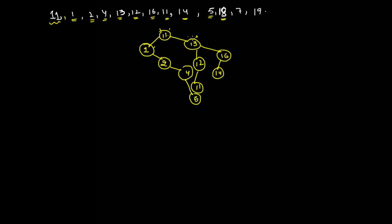18 is greater than 11, 13, and 16, so it comes to the right of 16. 7 is less than 11, greater than 1, 2, 4, and 5, so it comes to the right of 5. 19 is greater than 11, 13, 16, and 18, so it comes to the right of 18.